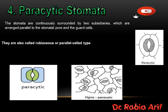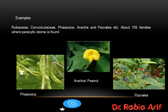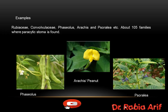The fourth type is the paracytic stomata. These are stomata that are surrounded by two subsidiary cells arranged parallel to the stomatal pore and the guard cells — a parallel arrangement. They are also called rubiaceous or the parallel cell type stomata. Examples include the Rubiaceae family, Convolvulaceae family, Phaseolus (bean plant), Arachis (peanut plant), and Sorrel. There are about 105 families which have paracytic stomata. The difference between diacytic and paracytic stomata is that in diacytic stomata the subsidiary cells are perpendicular to the guard cells, while in paracytic stomata the subsidiary cells are parallel to the guard cells.